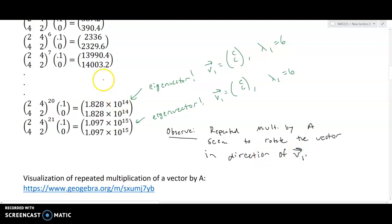Now that's interesting, but what is happening, why is this growing by this growth factor that happens from 1.828 times 10 to the 14th to 1.097 times 10 to the 15th? Well, guess what? If you multiply this guy by six, then you get exactly this guy here.